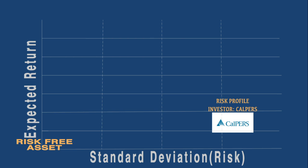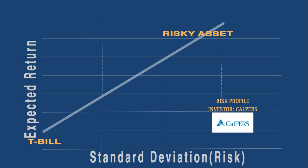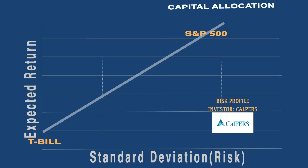The risk-free asset has zero standard deviation and therefore lies on the y-axis, while the risky asset — the market portfolio or S&P 500 index — is plotted at a separate point. The possible set of allocations lies on the capital allocation line.